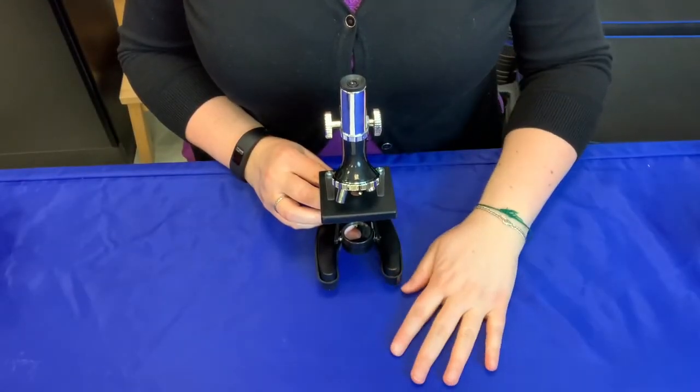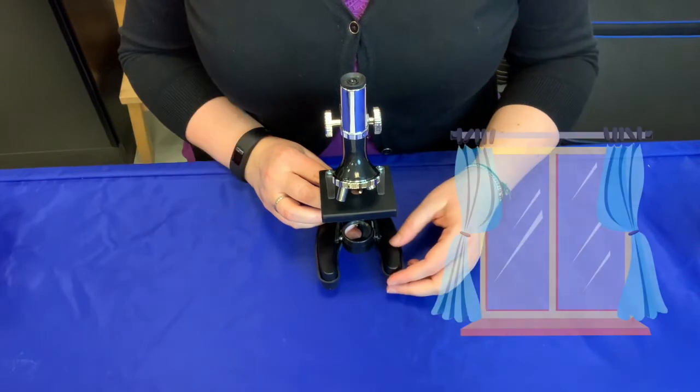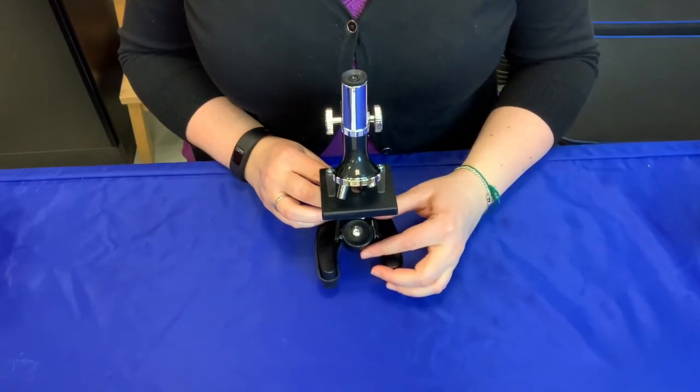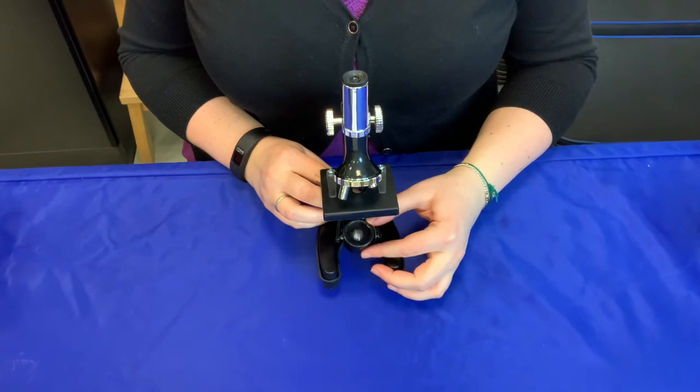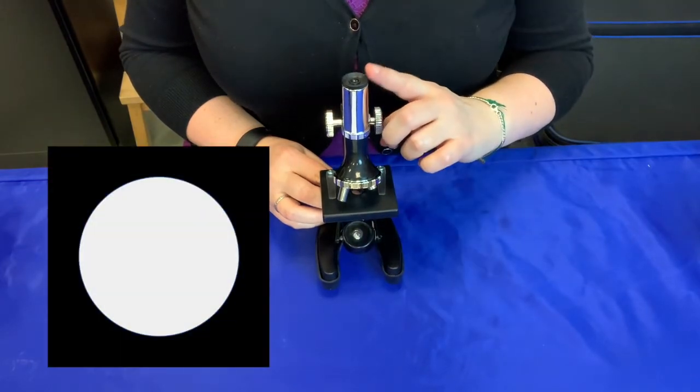Place the microscope on a flat surface near a bright light or a window. Locate the mirror down here at the bottom and adjust the angle so you see a bright circle of light when you look in the eyepiece.